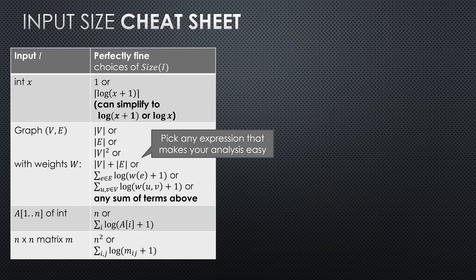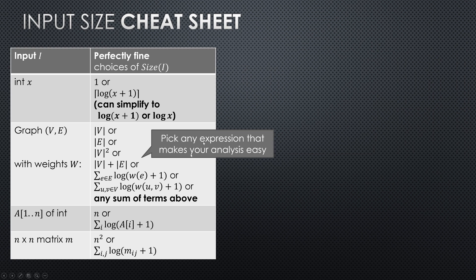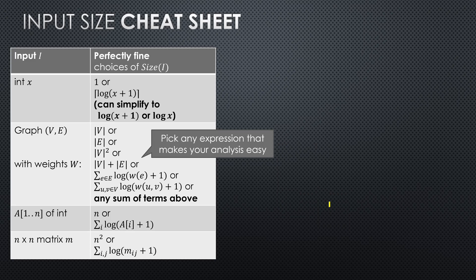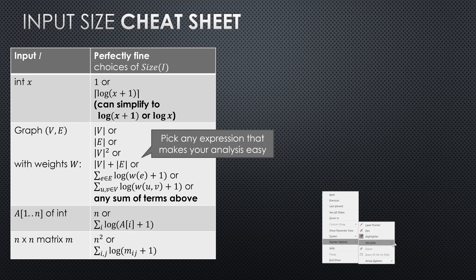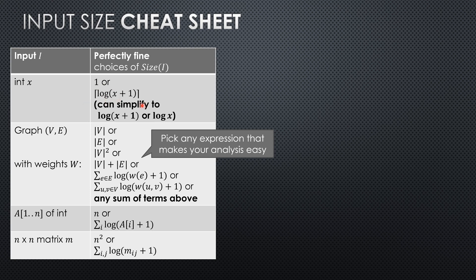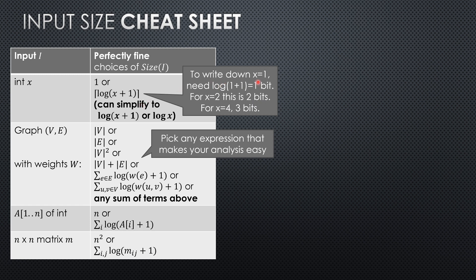On this input size cheat sheet, I want to make one amendment. Previously we had perfectly fine choices of size for an integer were 1 or log x. Now really, you want something more like the ceiling of log x plus 1. Why? Because if you want to write down x equals 1, you're going to need at least one bit to write that down in binary, right?